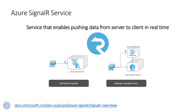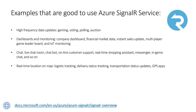What is Azure SignalR Service? It's a service available in Azure cloud that enables pushing data from server to client in real-time. You can imagine that if you have a Web API hosted on Azure, like in a web app, and you have some client applications like mobile apps, you can push real-time data from this web API to those client applications like Android and iOS apps using SignalR Service.